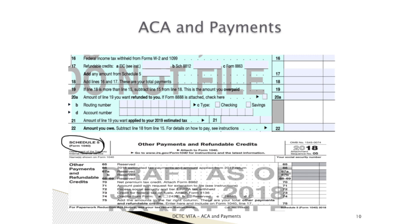The taxpayer has a few more options as well, but I'll let you read that on your own. That is located in Publication 4012, Tab K.